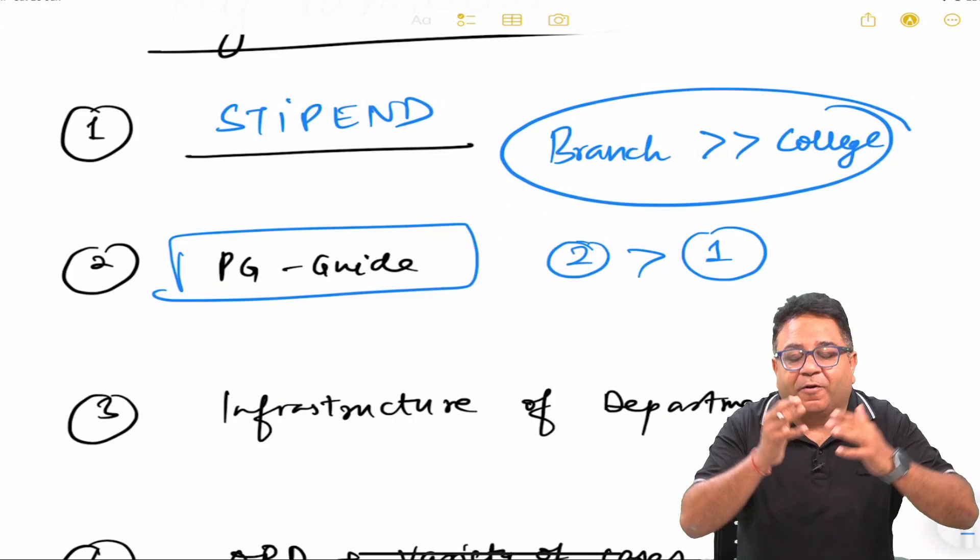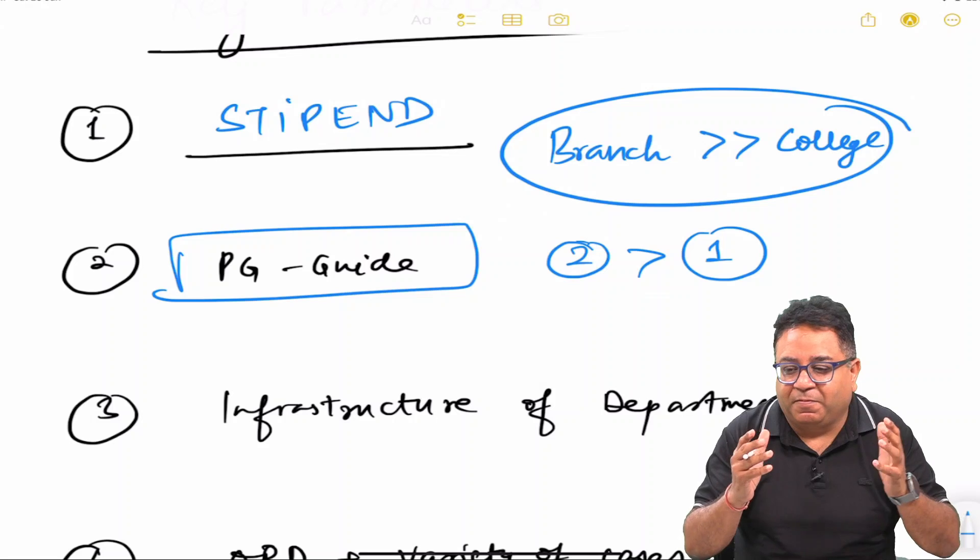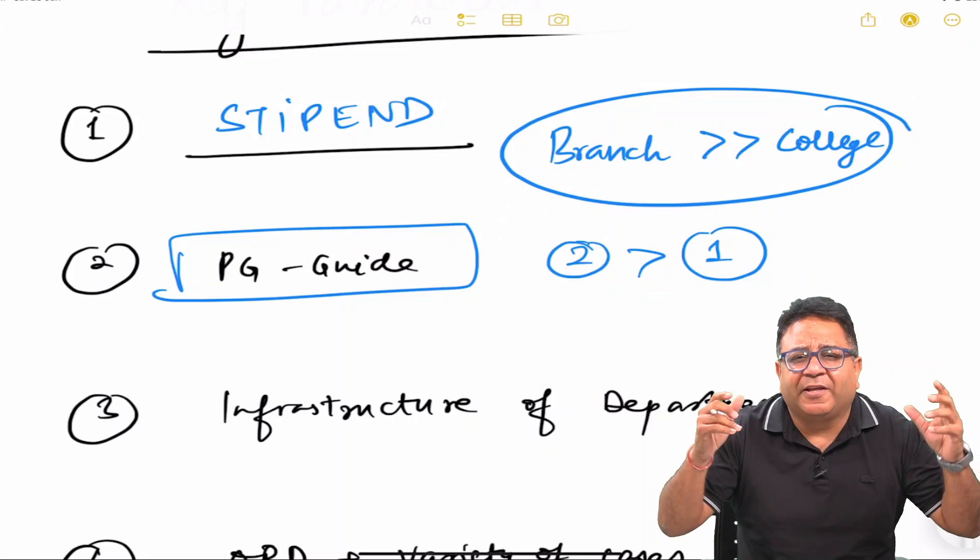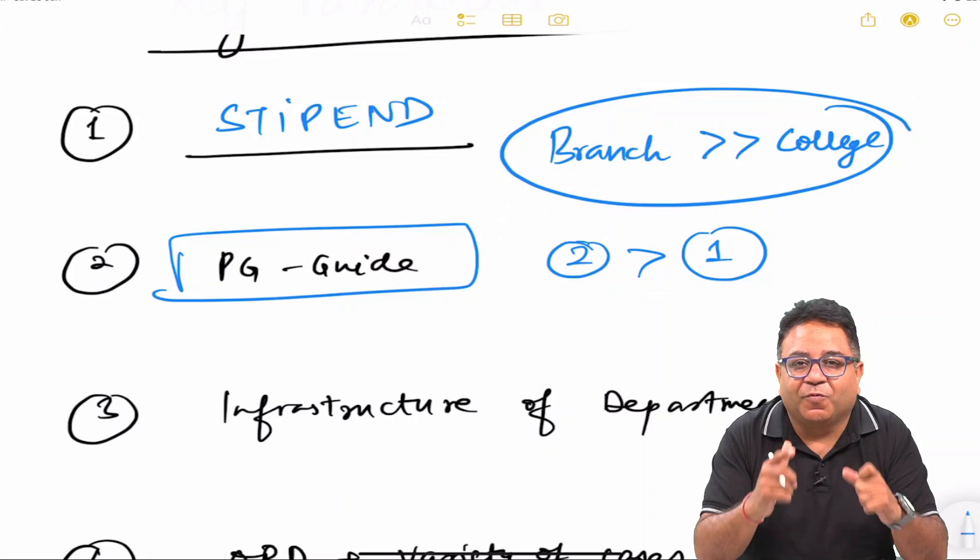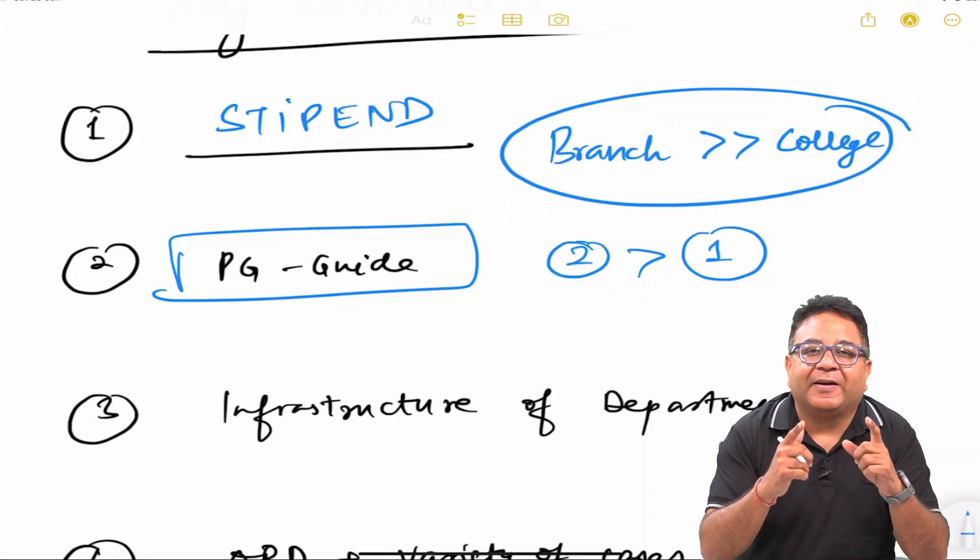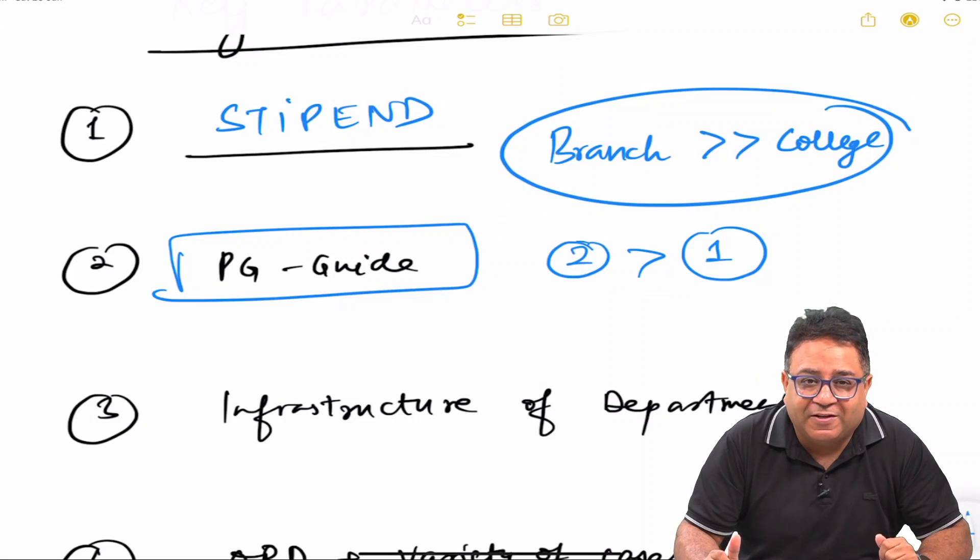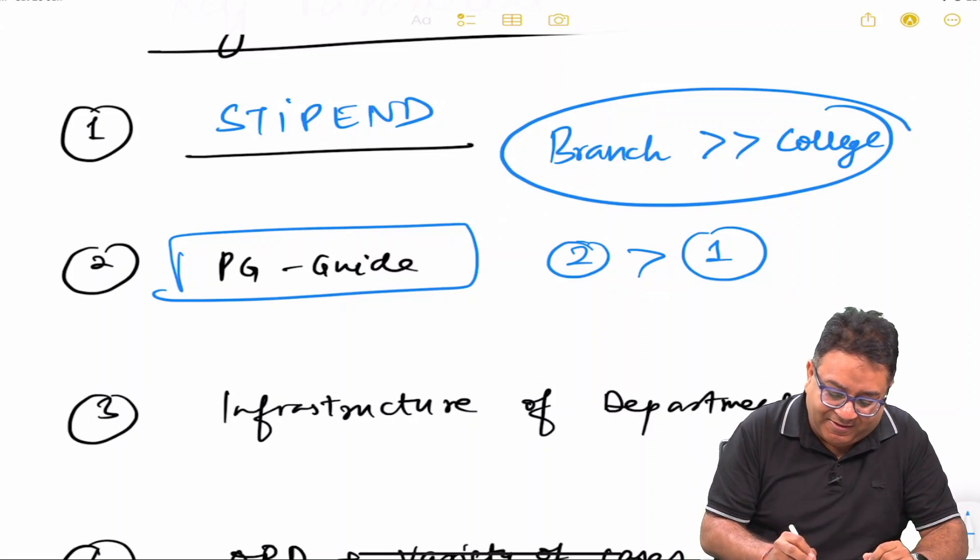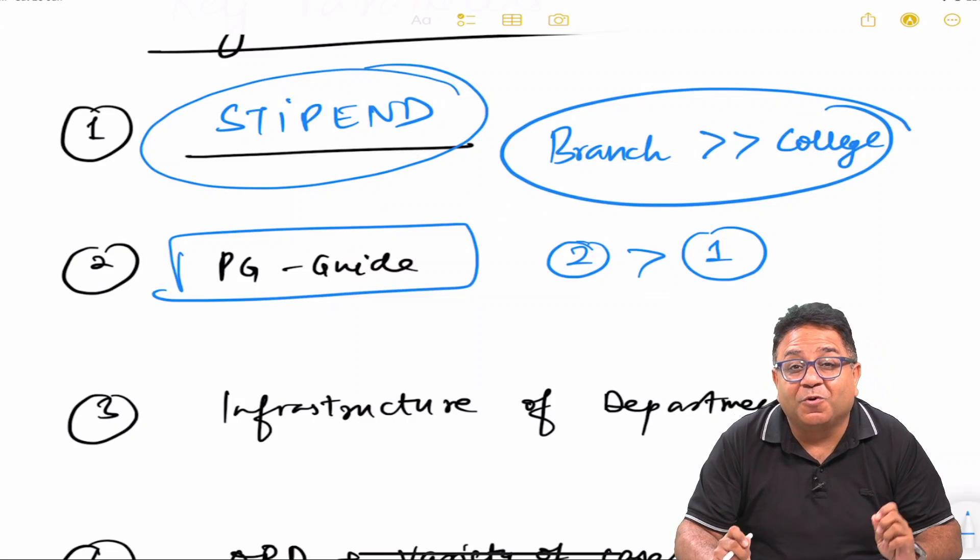If your guide is giving you a free hand, if your guide is progressive in research, if your guide has been into a lot of international tie-ups and making new advancements in the department, thinking out of the box—yes, icing on the cake you will get and you will carry forward that tradition for the rest of your life. The majority of students feel stipend is the most lucrative offer in terms of college selection, but yes.